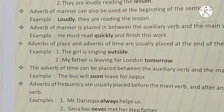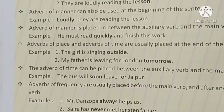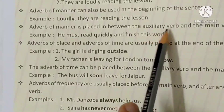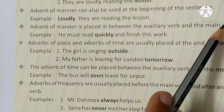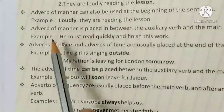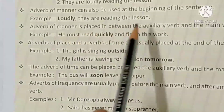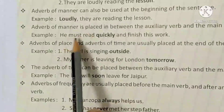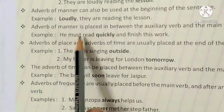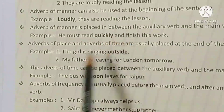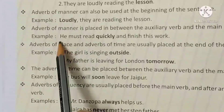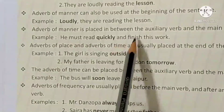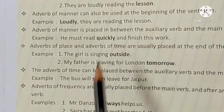Next point: the adverb of manner is placed in between the auxiliary verb and the main verb. Adverb of manner auxiliary verb और main verb के बीच में भी use किया जाता है। Example: 'He must quickly read and finish this work.'